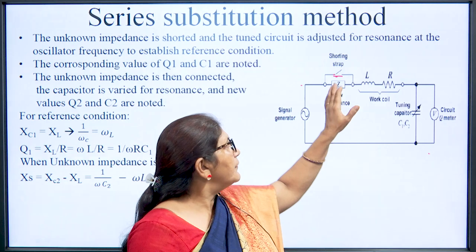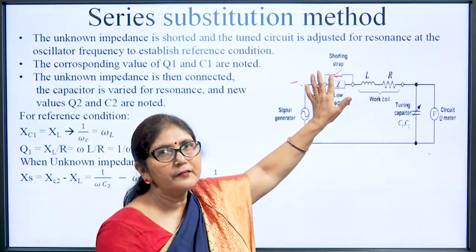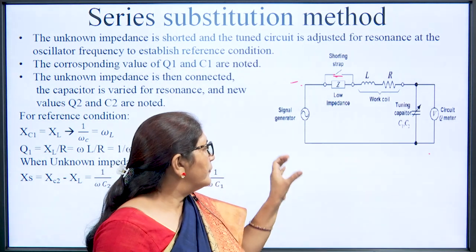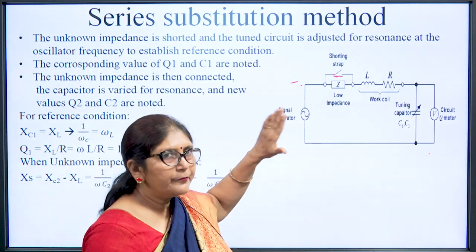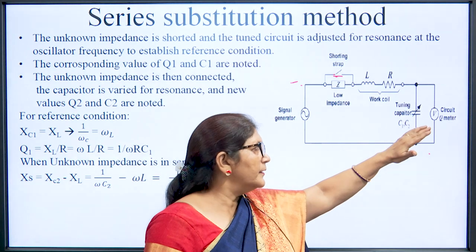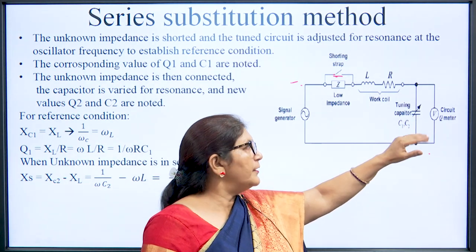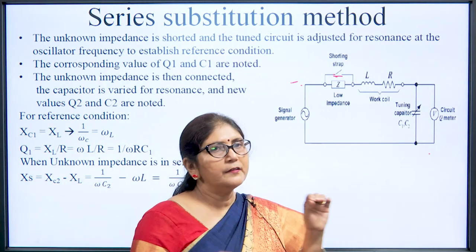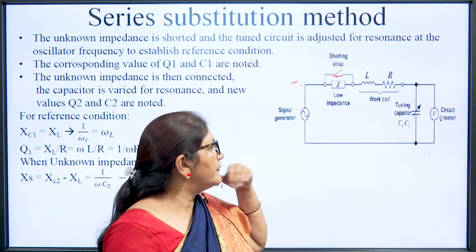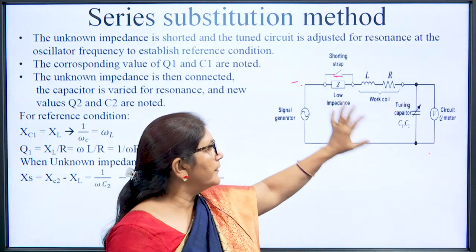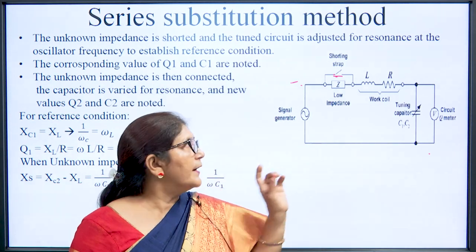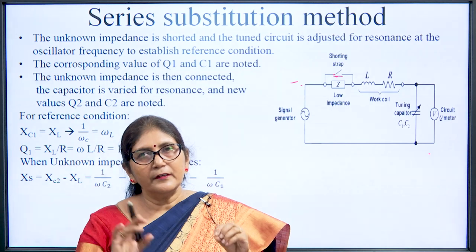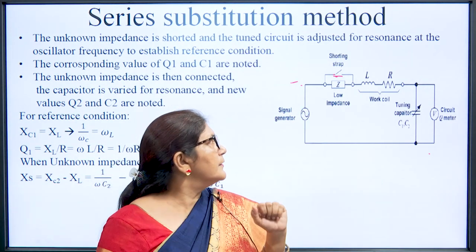After noting C1, we open the shorting strap so that the unknown impedance Z is now connected to the circuit. We keep the signal generator frequency fixed and vary the capacitor. When the capacitor is varied and the meter shows maximum reading, the circuit is again at resonance, incorporating the unknown component. We note down C2 — C2 includes both the circuit value and the unknown impedance.